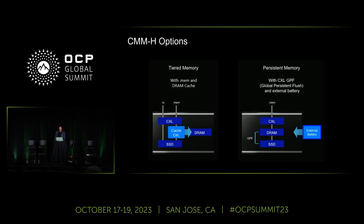There are two options with the CMMH. The tiered memory option provides .mem and DRAM cache availability, all within the same package as the SSD — NAND media storage plus DRAM cache inside. The second option is the persistent memory option, operating similarly to traditional NVDIMMs. The GPF — global persistence flush — is a CXL-specific command that enables the persistence. Today we're operating with a small external battery, but we're also investigating how to integrate a power or energy source within the device.